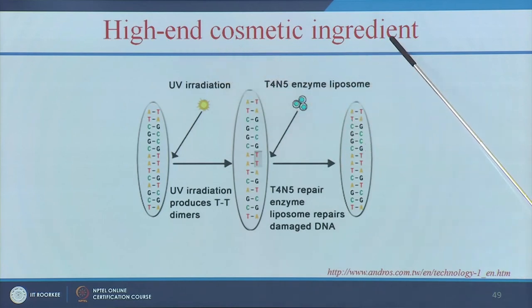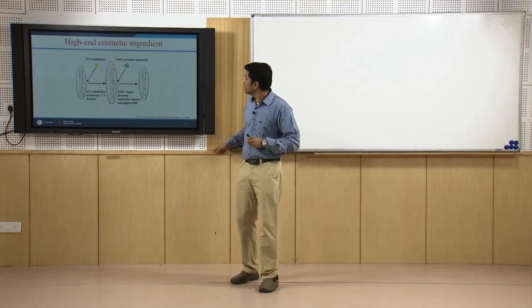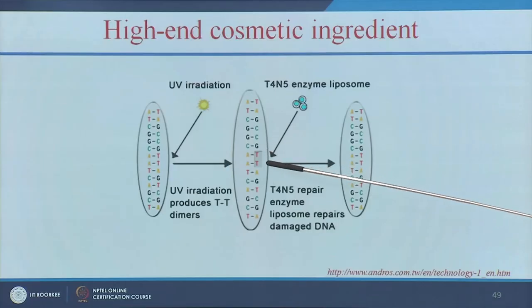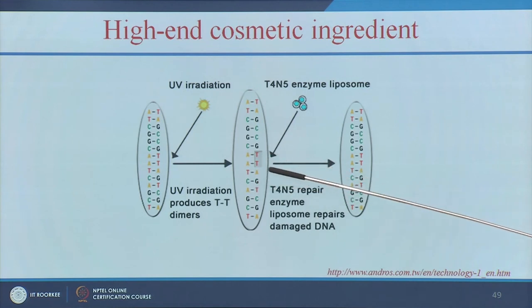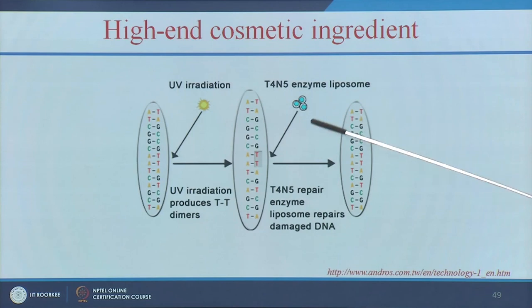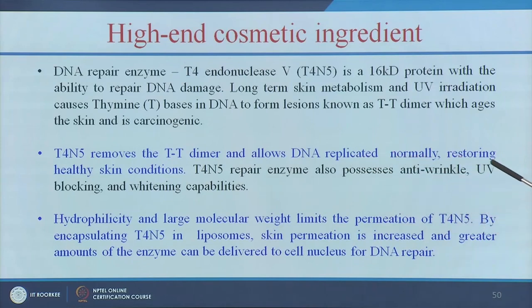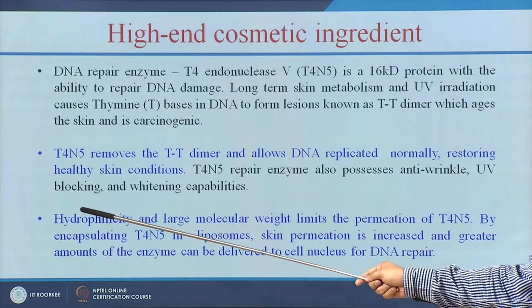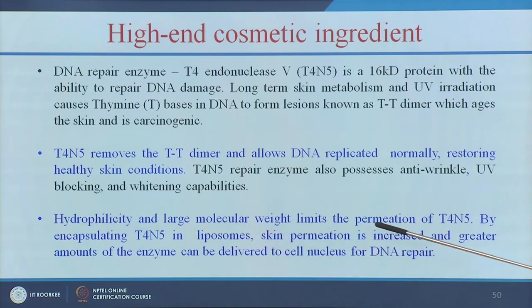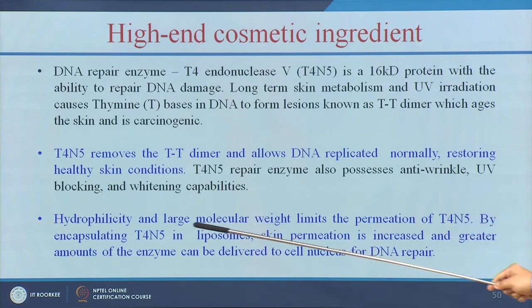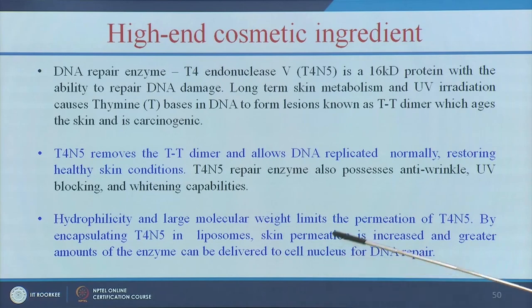Another high-end cosmetic application involves the T4N5 enzyme encapsulated in liposomes. UV rays in sunlight create thymine-thymine dimer formation in DNA, which damages cells and can cause skin cancer. T4N5 in liposomes repairs this damage — it removes the thymine-thymine dimer and allows normal DNA replication, restoring healthy skin. While T4N5 is hydrophilic with large molecular weight limiting skin permeation, encapsulating it in liposomes enhances skin permeation so greater amounts of enzyme are delivered to repair damaged DNA.